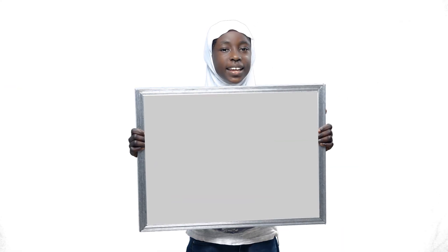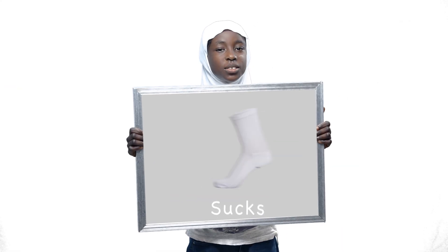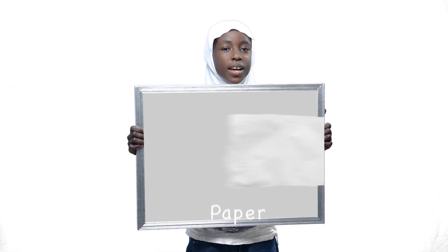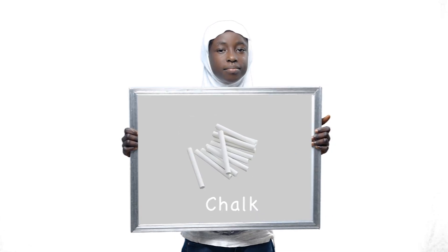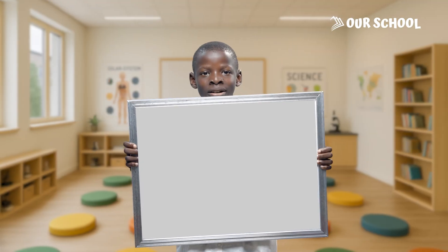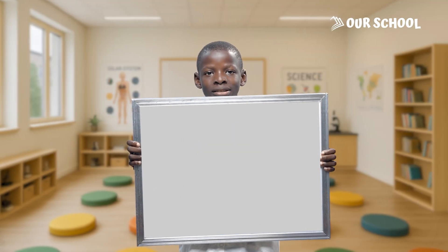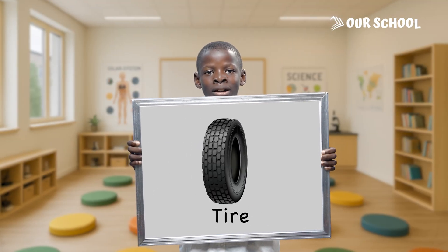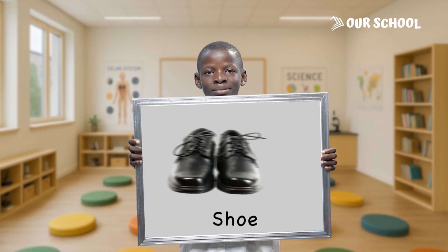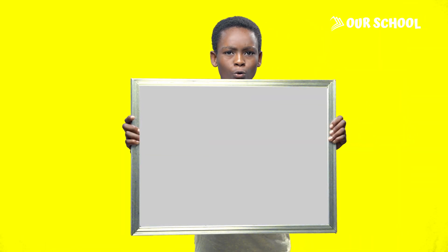I am white — white socks, white paper, white chalk. I am black — goat is black, tire is black, shoe is black.